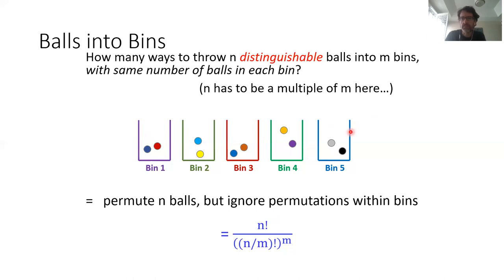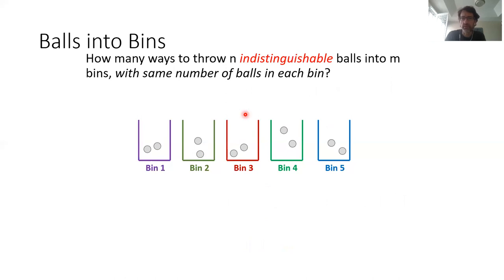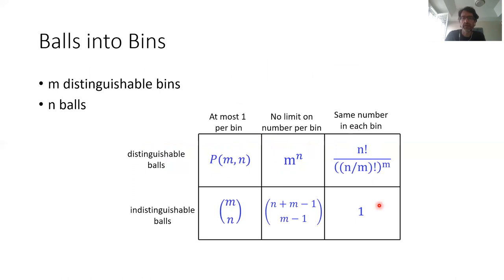What if balls are indistinguishable and you still require the same number in every bin? That's a joke question — there are no choices. Every bin must be filled with the same number of identical balls, so there is only one such arrangement. These are the remaining quadrants, showing in a unified way all the main counting types we've seen.